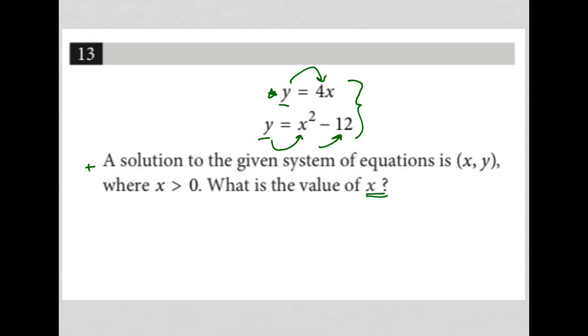So that's what we're trying to find. Anytime I have a system of equations both isolated for y, what I like to do is just set each equation equal to the other. Basically what I'm saying is if y equals 4x and y equals x squared minus 12, then 4x should equal x squared minus 12, right? Because that's y, and so is this. Y equals y.